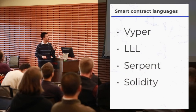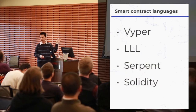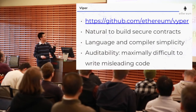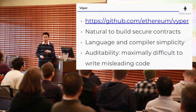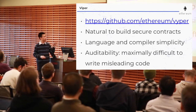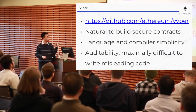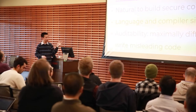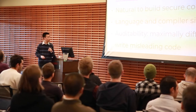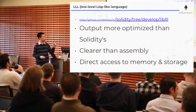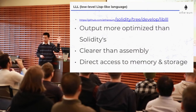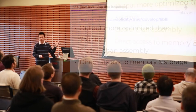There are other smart contract programming languages: Viper, LLL, Serpent, and older ones. We're going to be talking about Solidity. Viper is a newer development — it's being built so that it's natural to build secure contracts, with a simpler compiler and better auditability, making it very difficult to write misleading code. There's also a low-level Lisp-like language. I'll go through these slides faster since I have around 90 slides, but they're included for further reference.